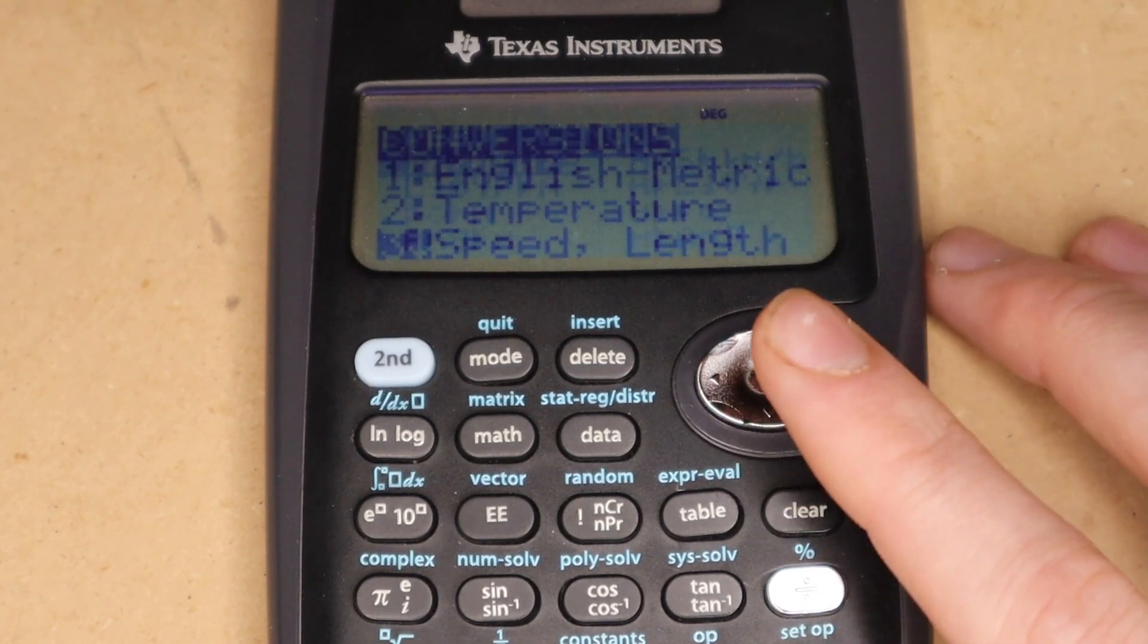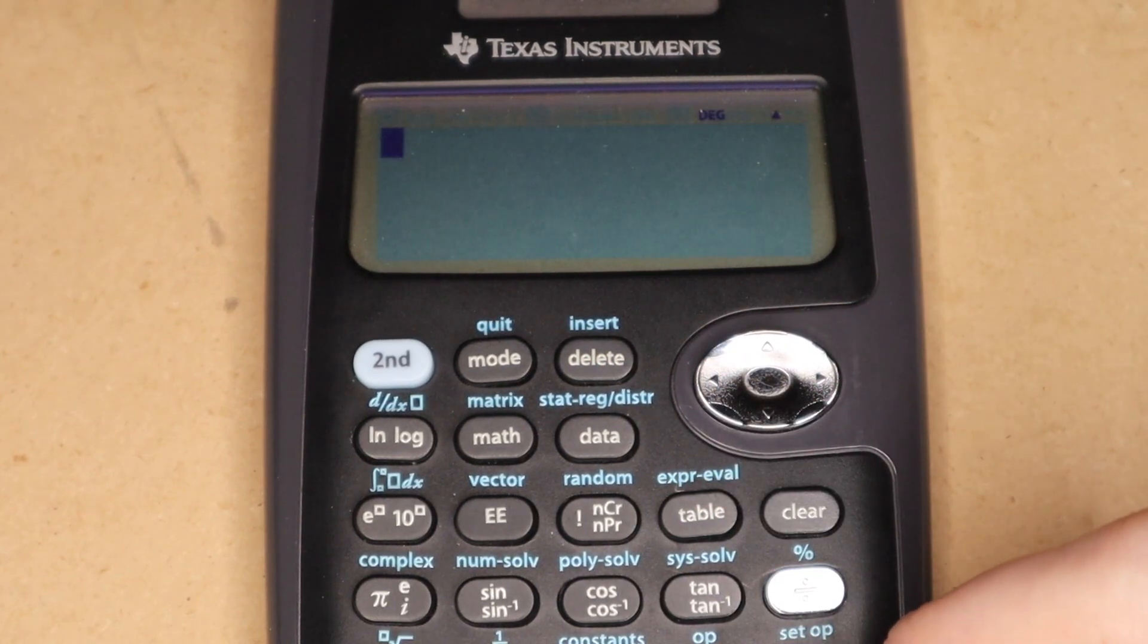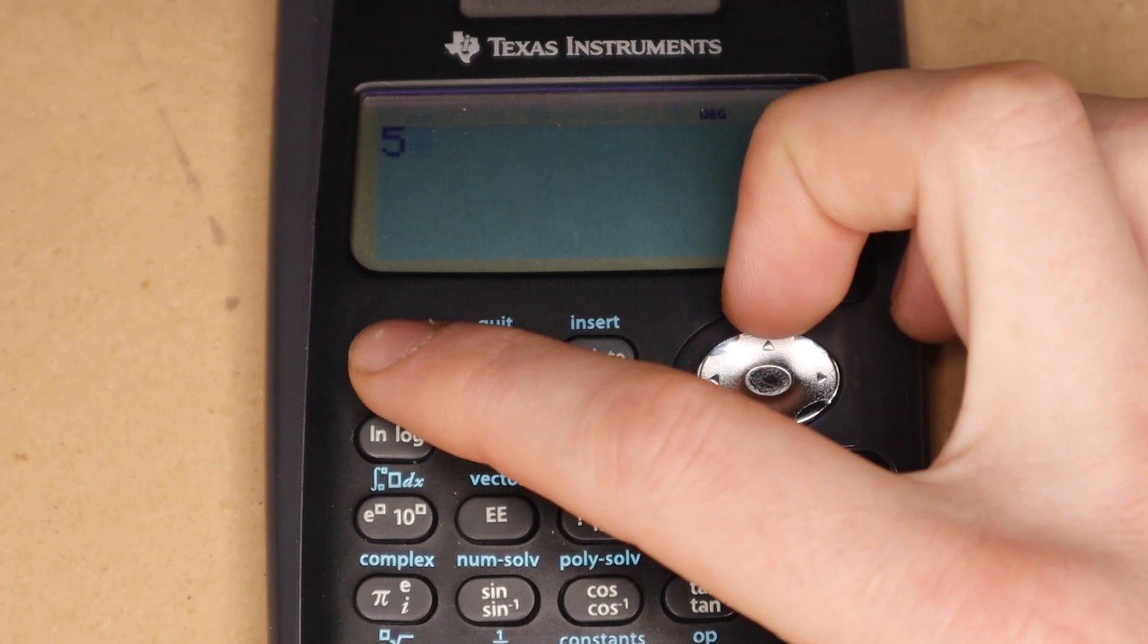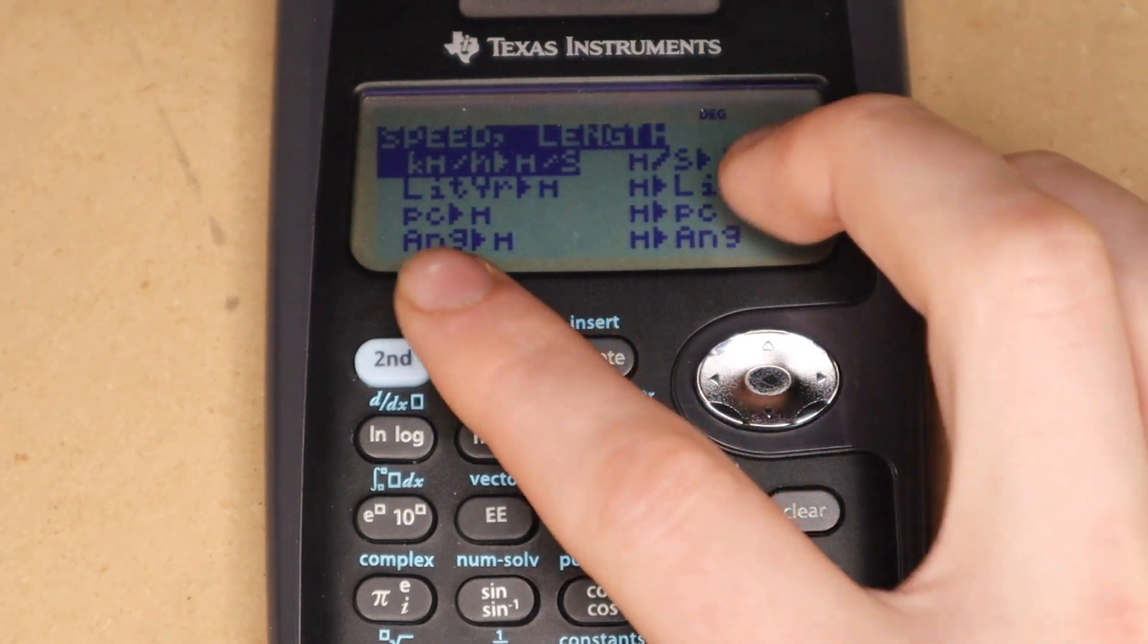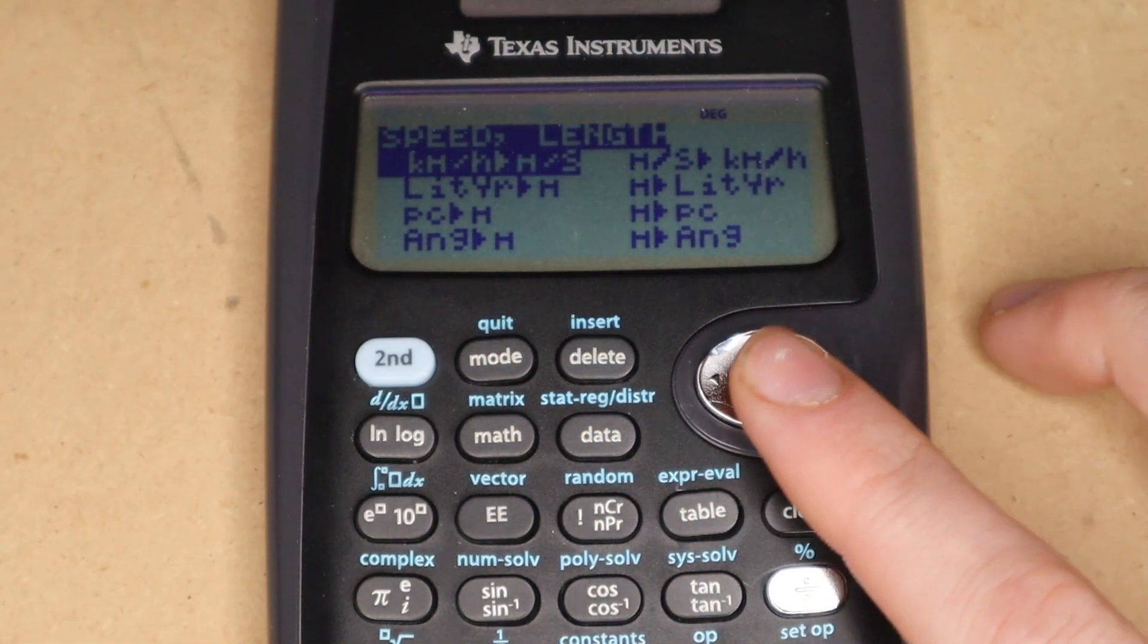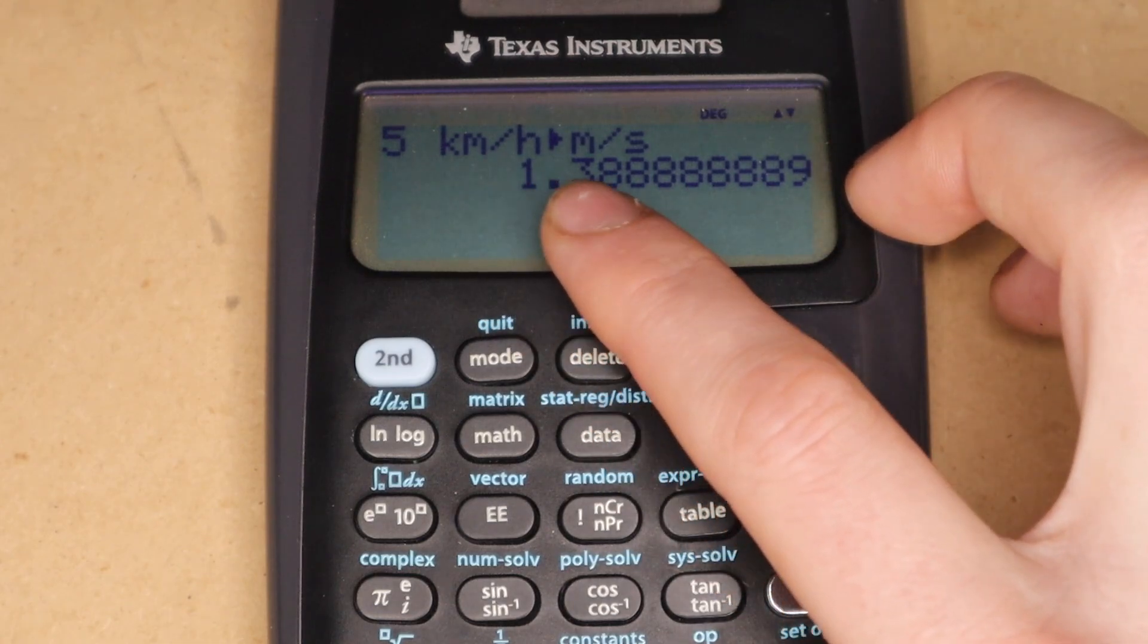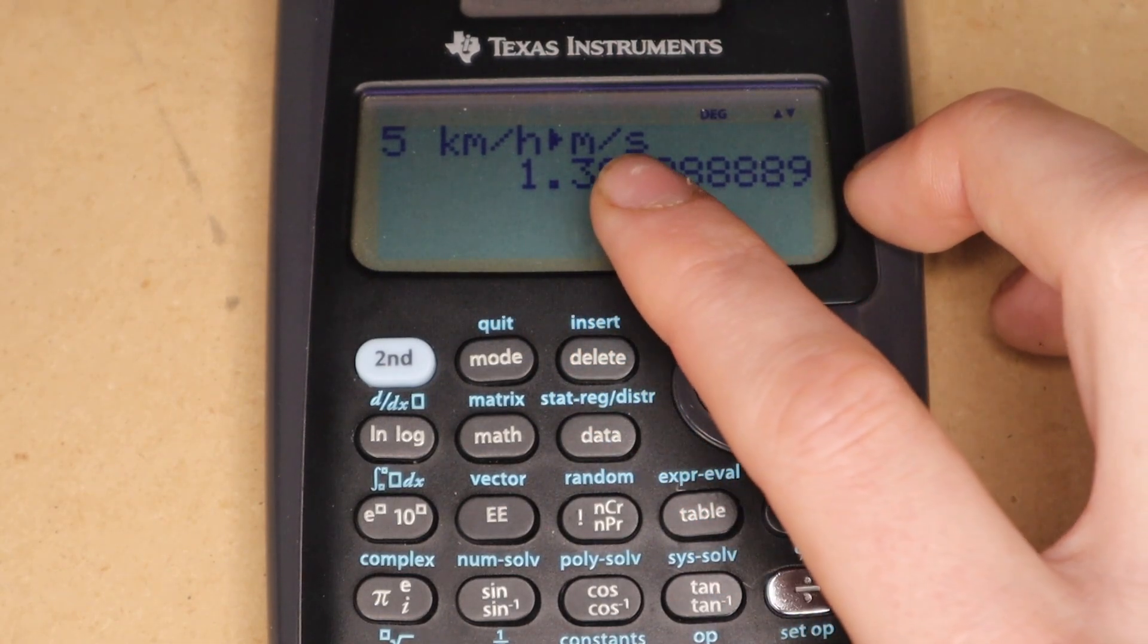And then next is the unit conversions app. So if I go into speed slash length here, you can see here's a bunch of different options. And if I wanted to convert, for example, 5 kilometers per hour to meters per second, I would enter 5, and then go into the conversion menu, go down to option 3, and here you can see kilometers per hour to meters per second. And then press enter there, and it will enter it in your calculation menu. Then just press enter again, and then it will give you your 5 kilometers per hour is equivalent to 1.38 repeating meters per second.